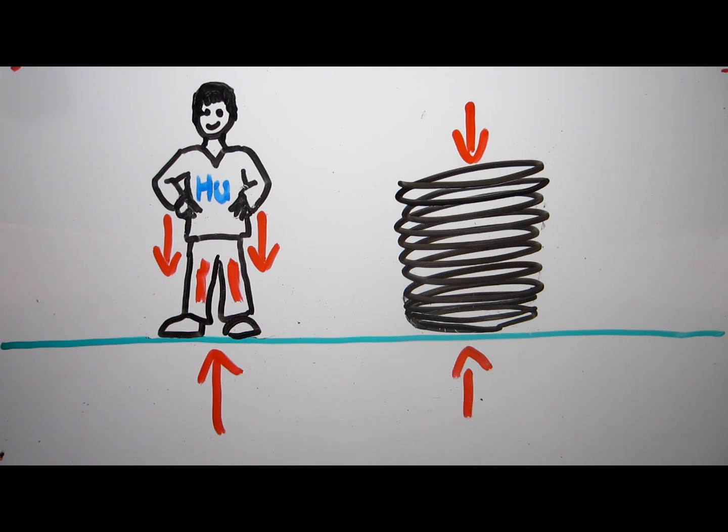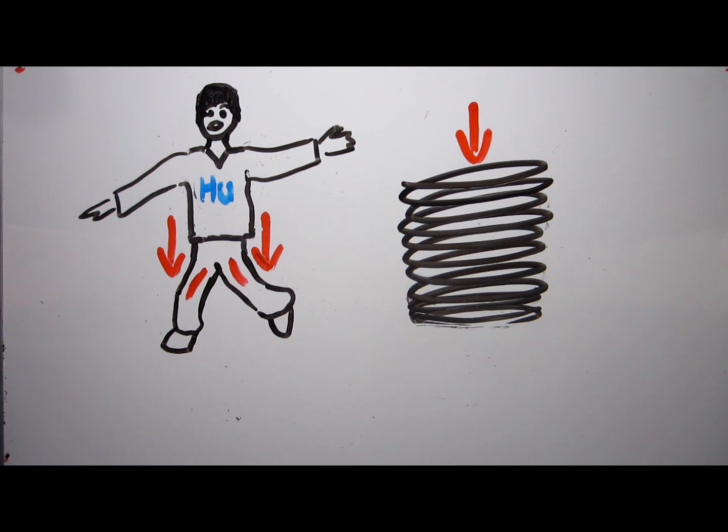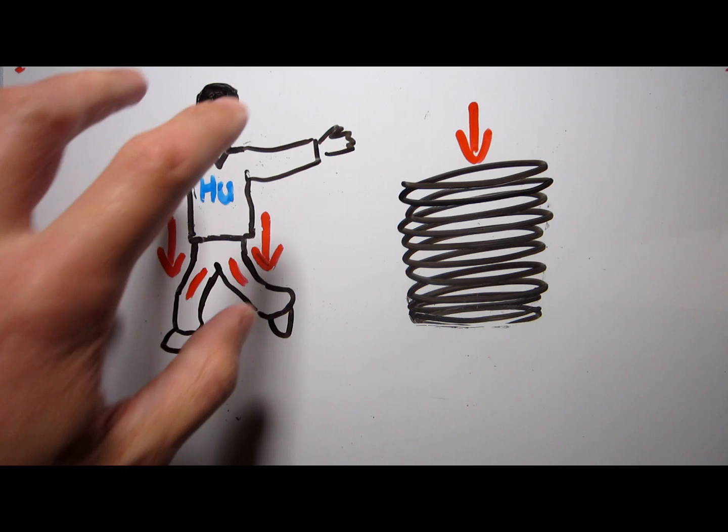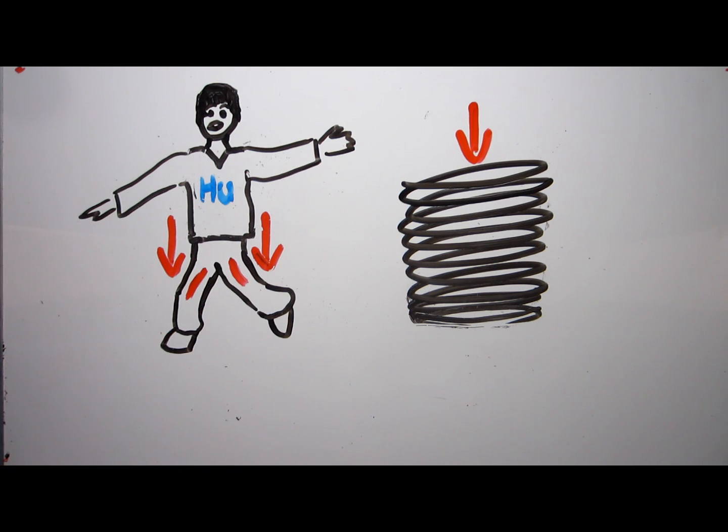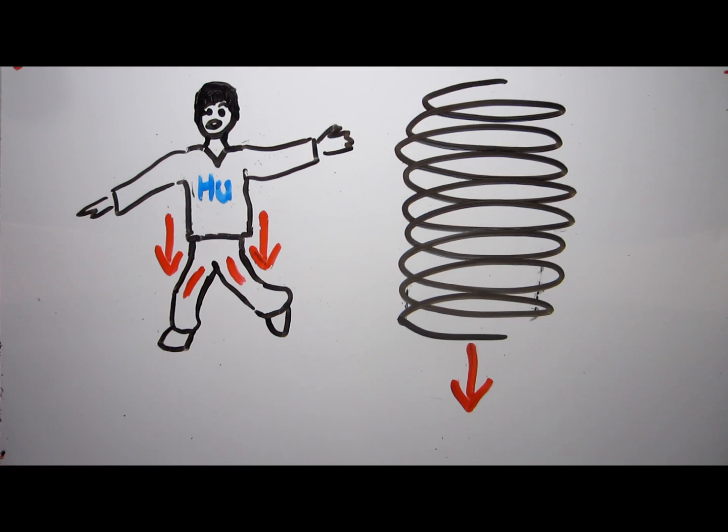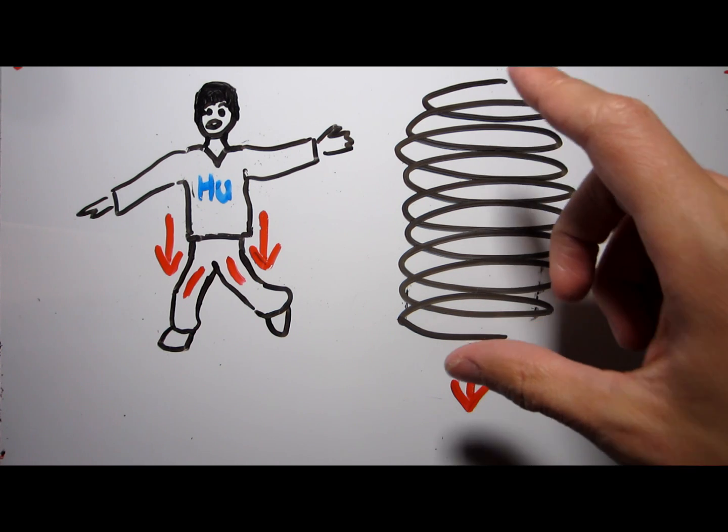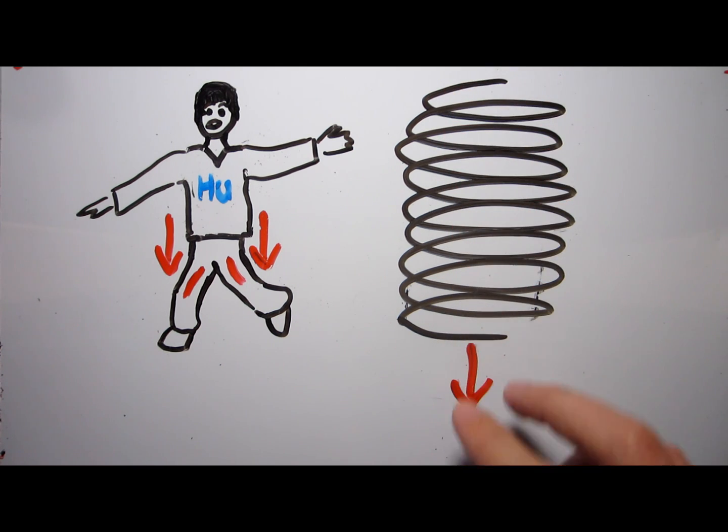If you were falling towards the Earth without any opposition, only gravity would be acting on you. Remember that gravity acts on every part of your body at once, giving each part of you the same acceleration. So a spring in this situation wouldn't experience any compression, just uniform, unimpeded acceleration towards the Earth.